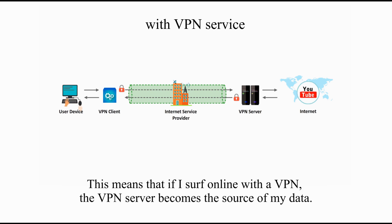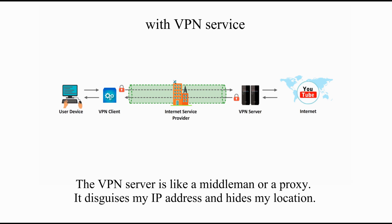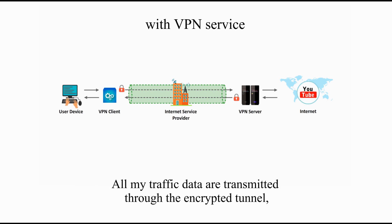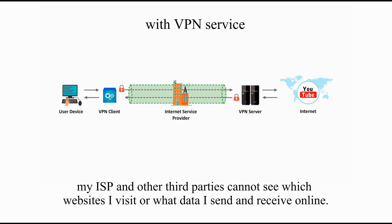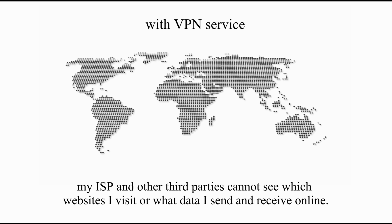If I surf online with a VPN, the VPN server becomes the source of my data. The VPN server acts like a middleman or proxy — it disguises my IP address and hides my location. All my traffic data are transmitted through the encrypted tunnel, so my ISP and other third parties cannot see which websites I visit or what data I send or receive online.